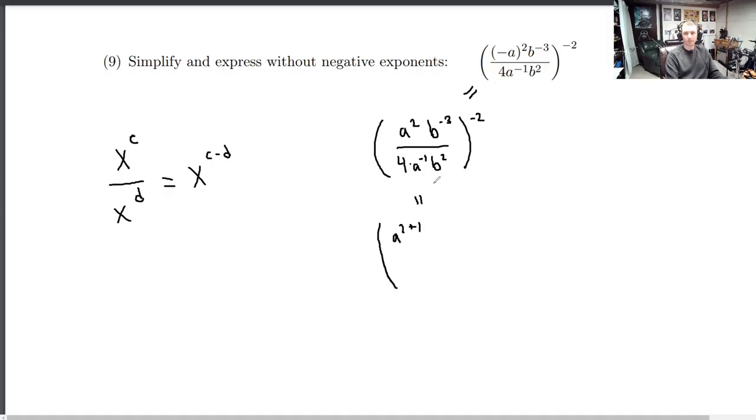There's another rule about going down. So this is also equal to 1 over x to the d minus c. So this fraction over here would be the same, but going into the denominator, you take the denominator power subtracted by the numerator's power. We're going to do that for b. So this is 4 times b to the 2 plus 3.